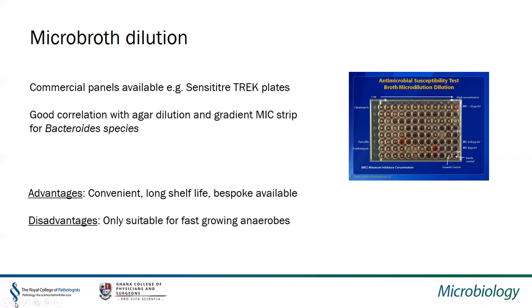Microbroth dilution is more commonly used for aerobic bacteria, but we've used it comparably for some fast-growing anaerobes like Bacteroides. It showed promising results, and there are commercially available panels that offer convenience, ease of use, and a long shelf life — though currently only suitable for fast-growing anaerobes.